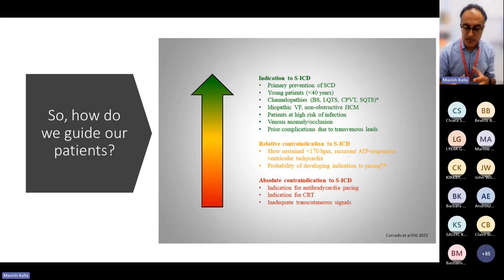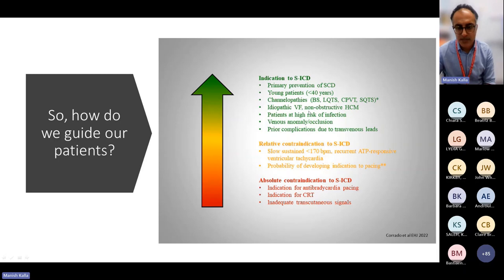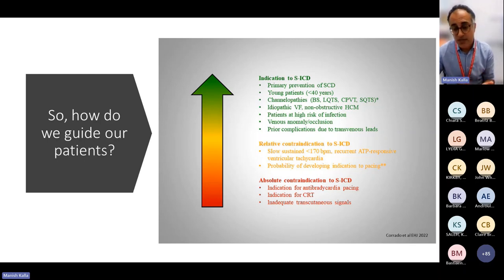Protecting someone for one or two decades without an intravascular system is a good outcome. SICD is particularly suited to primary prevention of sudden cardiac death in young patients, channelopathy patients unlikely to need pacing — though long QT needs careful consideration — idiopathic VF, non-obstructive hypertrophic cardiomyopathy, high infection risk, patients who have had previous transvenous system extractions, dialysis patients, and those with prior transvenous lead complications or lack of vascular access.